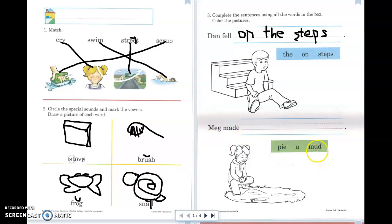Pie a mud. So what I want to do is I want to figure out how I can make this a sentence that makes sense. Meg made pie a mud. That doesn't make sense. How about a mud pie?